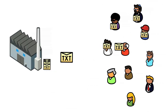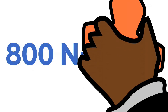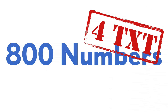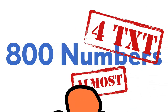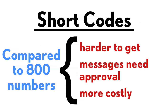You use shortcodes if you want to send a text to a lot of people at once. They're like 800 numbers for text messages — except they're not. Compared to 800 numbers, shortcodes are harder to get, your messages need approval from the phone company, and they're much more costly.